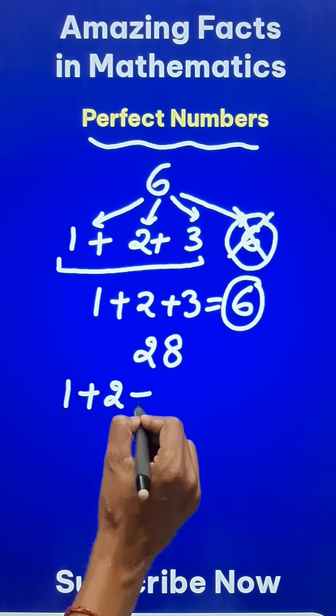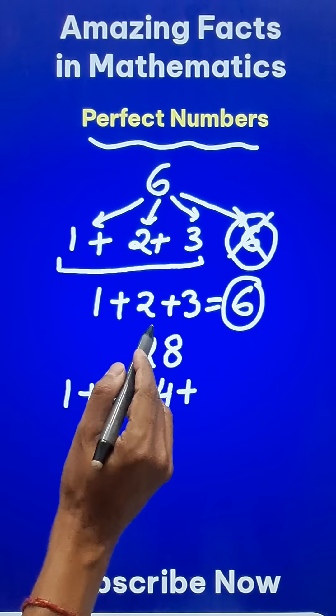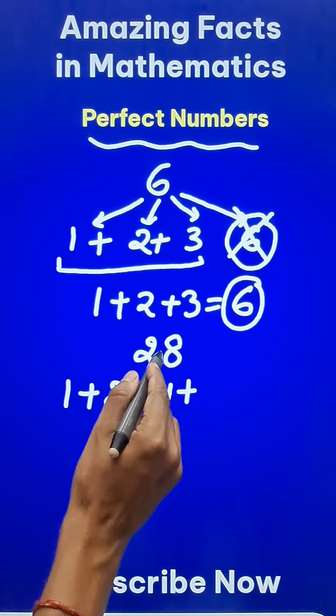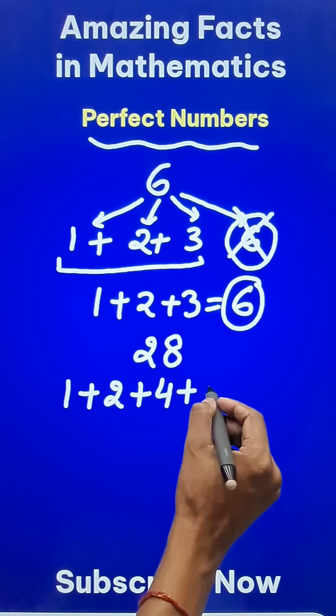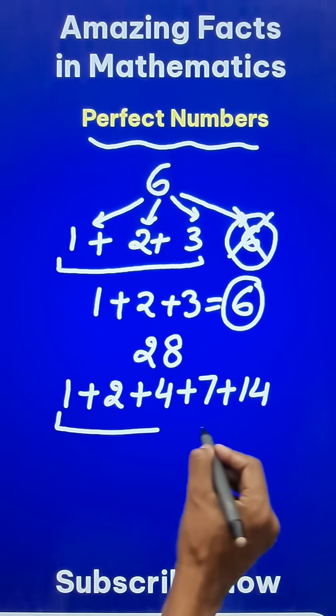1 plus 2, this is divisible by 4, not divisible by 5, 6, 7, 8, 9, 10, 11, 12, 13, and then 14, right? So 7 and 14 are the only other factors. Now add all of these,